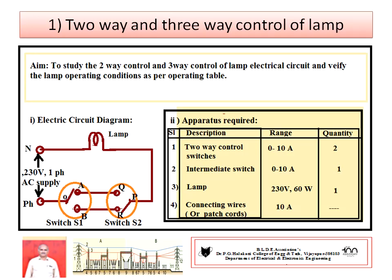Today we have to make the discussion on experiment one: two-way and three-way control of lamp. You may get the experiment question like this: 'Conduct a suitable experiment to verify the operating conditions of two-way control and three-way control of lamp.' The aim is to study the two-way control and three-way control of lamp electric circuits and verify the lamp operating conditions as per the operating table, also called the working table.